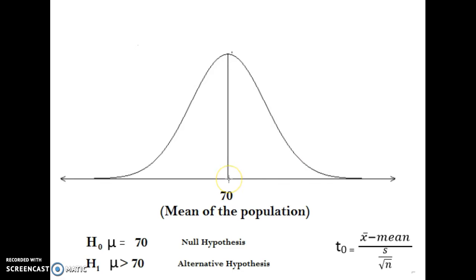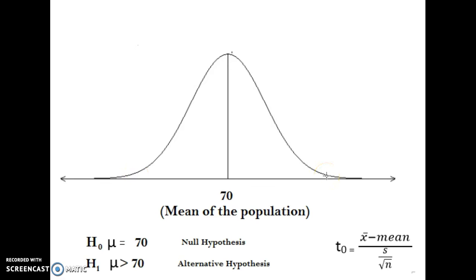So what that means is, for the most part, when we look at a sample, the average height of that sample will probably be pretty close to 70. It is definitely possible to get a sample with an average height much lower than 70 or much higher than 70 — it's just not as likely, because most of the distribution is close to the mean.